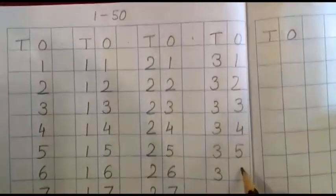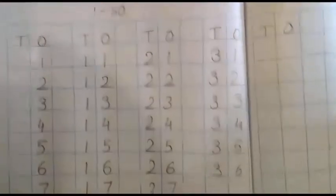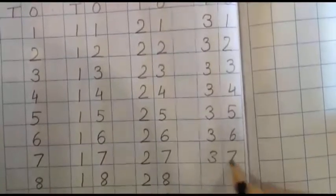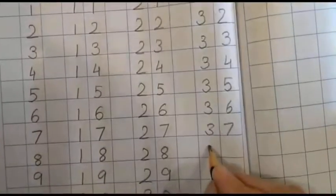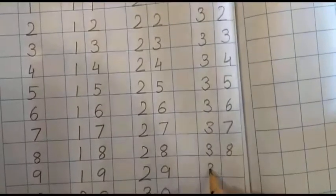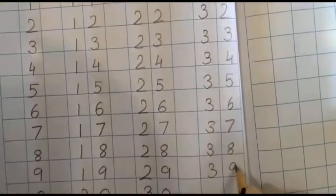Three six thirty six, three seven thirty seven, three eight thirty eight, three nine thirty nine.